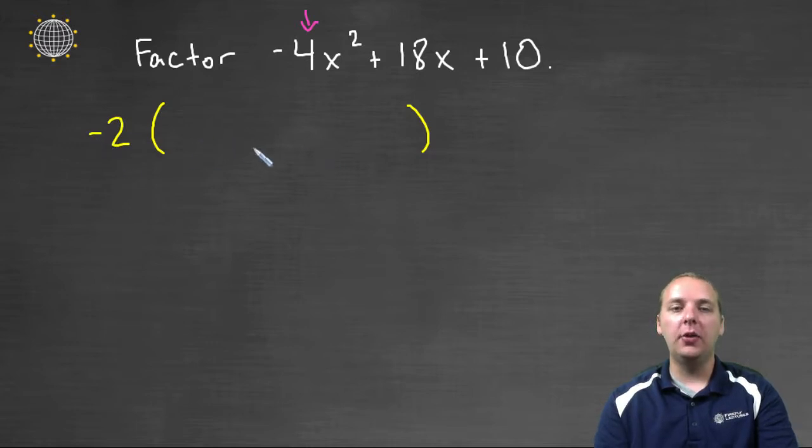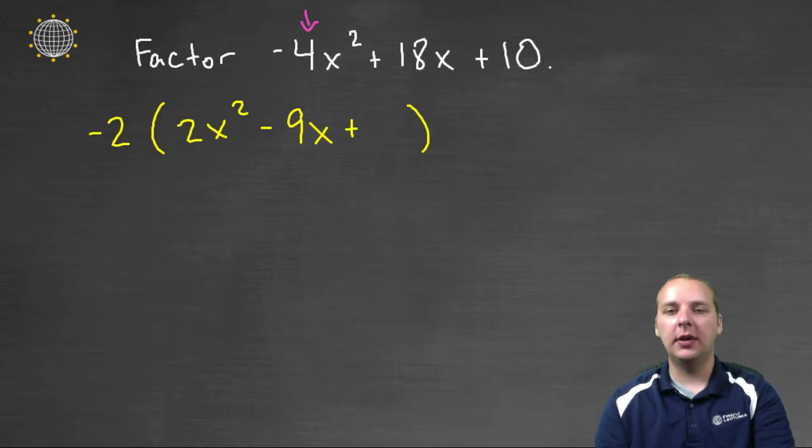Which will make our leading term of the polynomial be a positive 2x². Because -2 times 2x² would give us -4x². And then we'll have -2 times -9x would give us positive 18x. And -2 times -5 would give us positive 10. And so you see by pulling out the -2, we've actually made sure that our leading coefficient here was positive, which is a good thing.